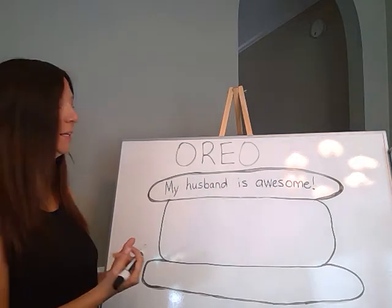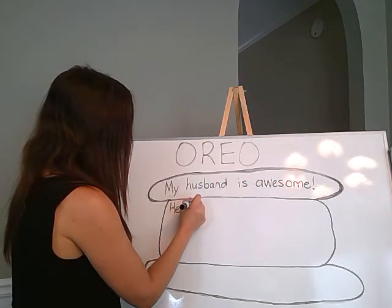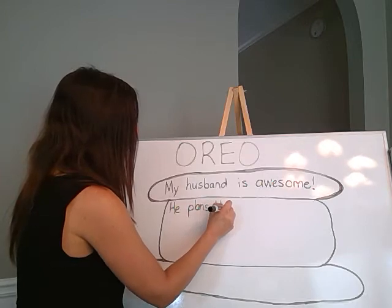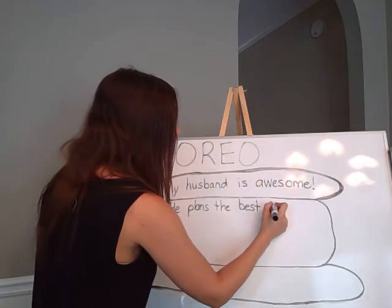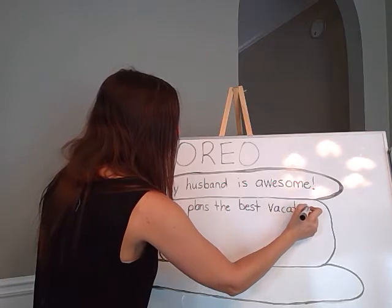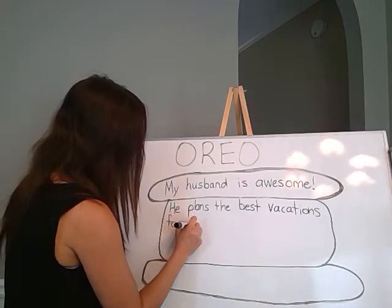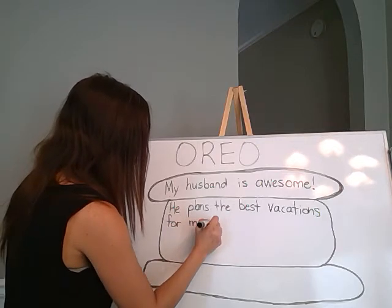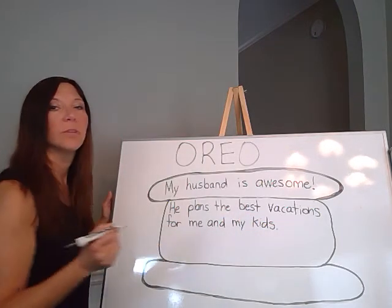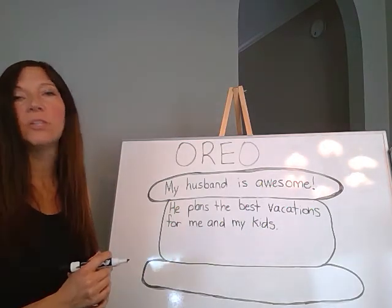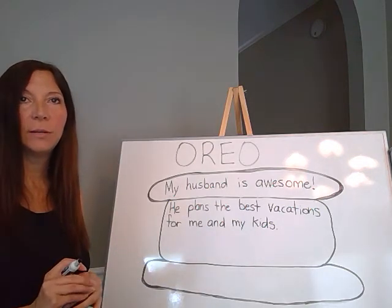You don't need to write it like a cookie shape — just write on a regular piece of paper, type it, or however your teacher asked you to do it. My first reason why he is so awesome is that he plans the best vacations for me and our kids. Starting with a capital: 'He plans the best vacations for me and our kids.' Make sure you leave spaces between your words. Now you should be writing a sentence about your mom — what's one reason why your mom is amazing?